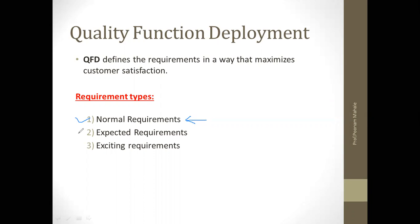The next are expected requirements. These are implicit types of requirements — not clearly stated by the customer, but the customer expects them. The customer assumes these things will be there in the product. For example: the developed system must provide easy human interaction, the system should be menu-driven, user-friendly, and should have hot key buttons. These are requirements not specified by the customer but expected from the system.